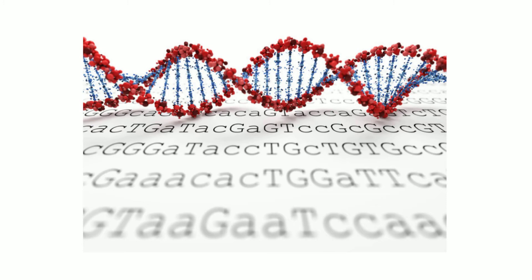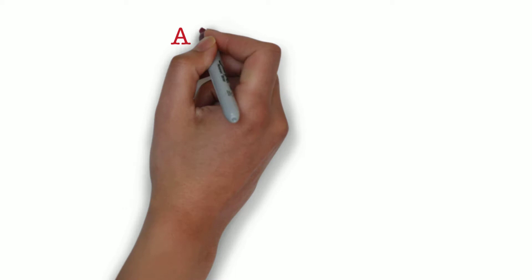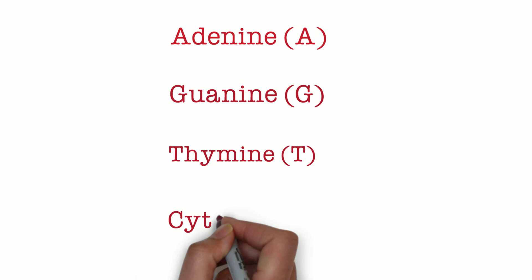The units of the code are simple, just four different molecular components: adenine (A), guanine (G), thymine (T), and cytosine (C).